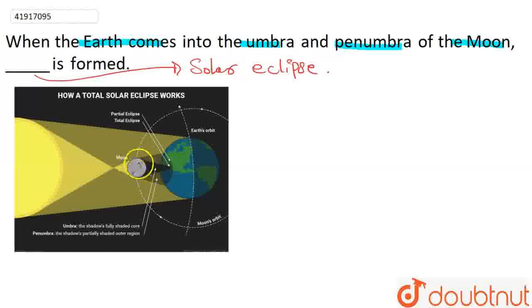When our moon is present in between the sun and earth, and because of the moon, when its shadow is cast on the earth, we call this solar eclipse.